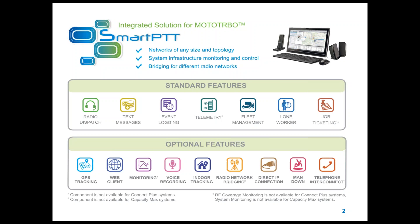Lone worker is also a standard function. If you have a worker who's working alone in a hazardous work area, we can automatically turn on the alone worker functionality for that subscriber, so while they're working in that hazardous work area it's like they're being watched by the dispatcher automatically. If they don't move or PTT their radio for a period of time, we can notify the dispatcher that there may be an incident occurring. We also do job ticketing standard, which gives you work order management.